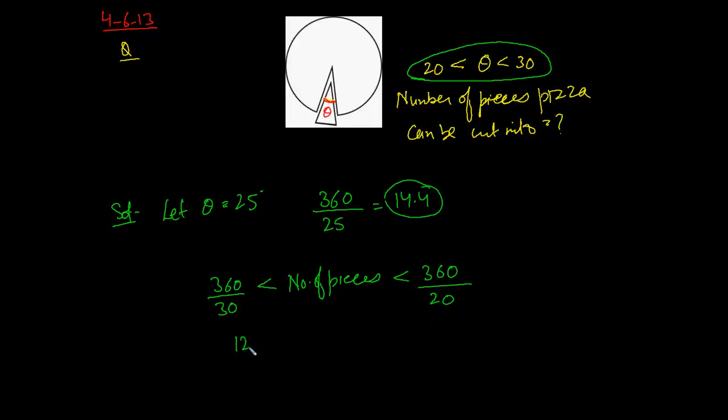What we get here is the number of pieces should be more than 12 and less than 18. So one possible number we can have is 13, 14, 15, 16, or 17.